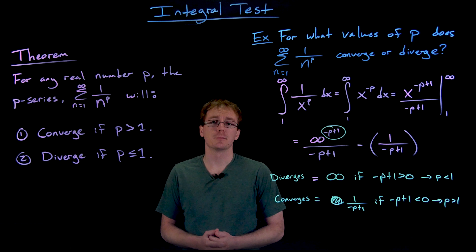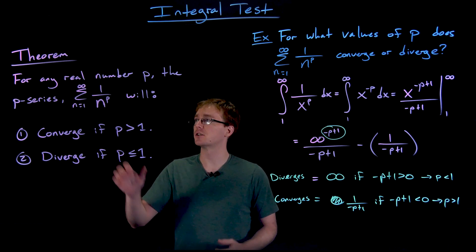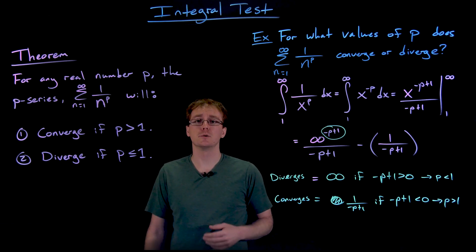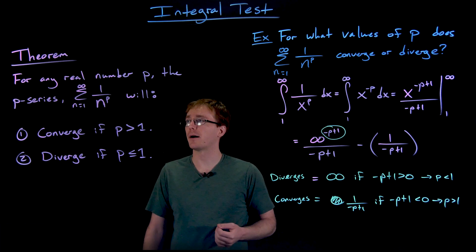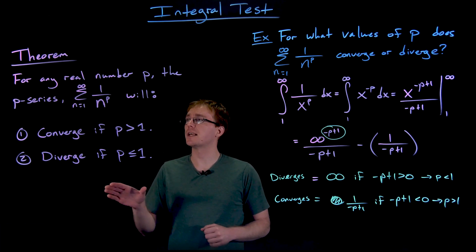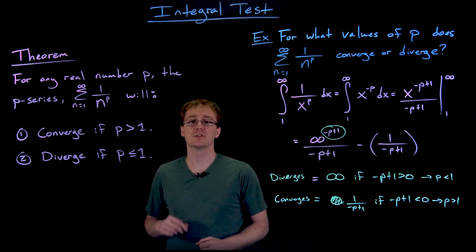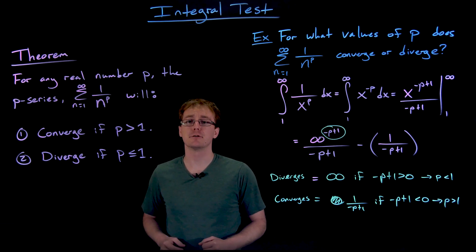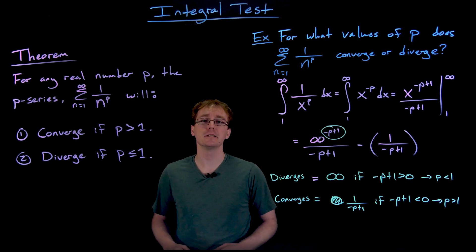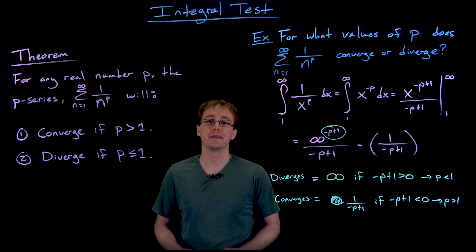So this example that we just finished up is actually a pretty important result, so we're going to go ahead and summarize it in this theorem. This type of series, the sum from n equals 1 to infinity of 1 over n to the power of p, is what we're going to call a p-series. And this theorem says for any real number p, the p-series will converge if p is greater than 1 and will diverge if p is less than or equal to 1. If it was up to me, I would call this theorem the p-test, but I understand why textbooks do not use that name.